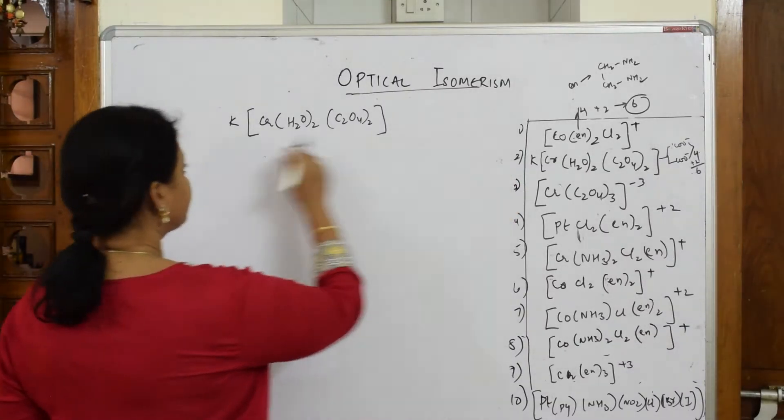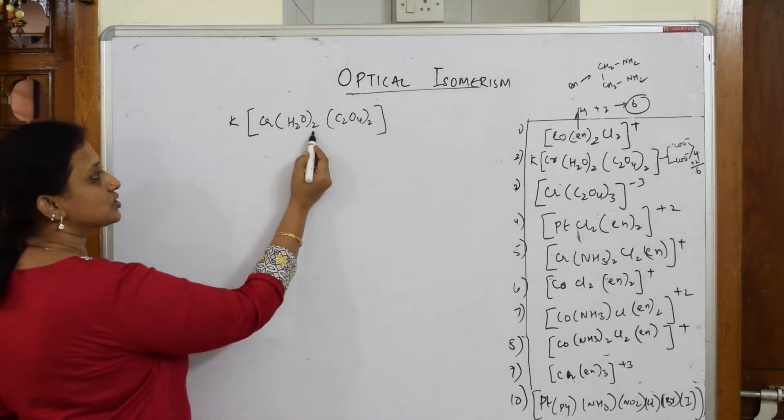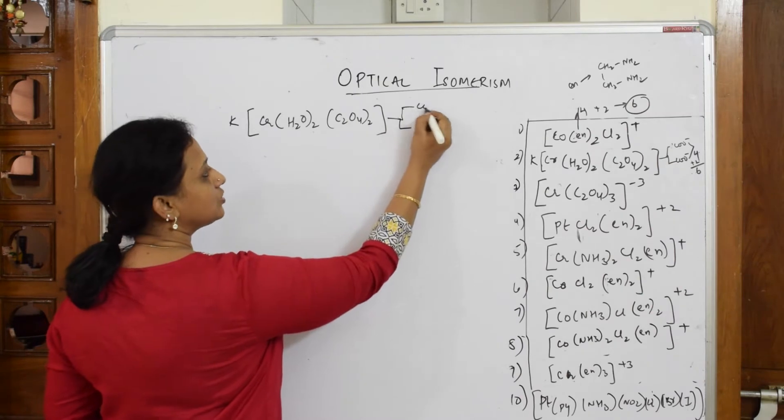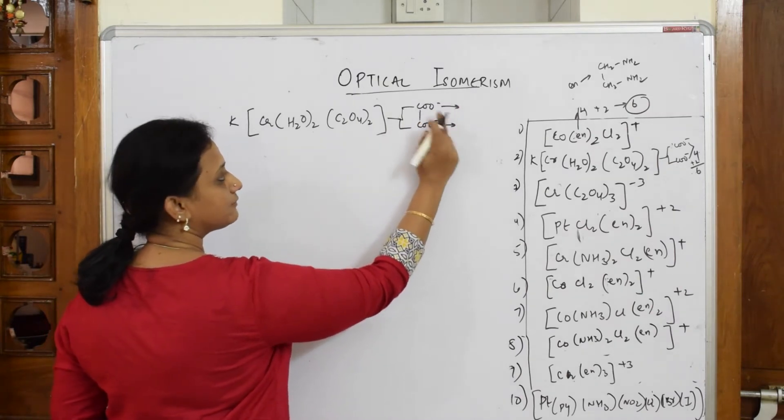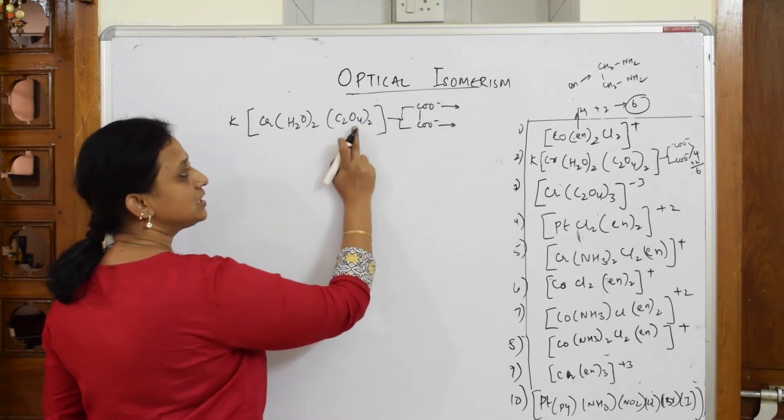Now let's come back to the next example. This complex is given to you. I know this is 2 and oxalate, and the formula I've already written is COO- linked with COO-. So you already have two donor sites for one oxalate. For two oxalates, it's total four donor sites.